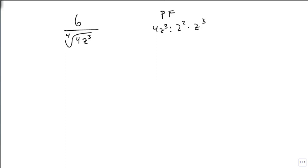That means for our multiplying factor, we need 2s and zs. We need two more 2s so that it adds to 4, because it's a fourth root. And we need one more z, because we already have 3, and that adds up to the 4.